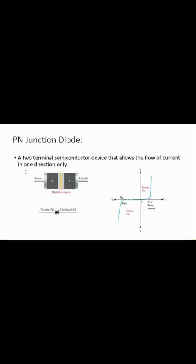First, let's revise the basics. What is a PN junction diode? It's a two-terminal semiconductor device that allows the flow of current in one direction only. The P-type semiconductor is called the anode side and the N-type semiconductor is termed the cathode side. Current can flow from anode to cathode or from cathode to anode.